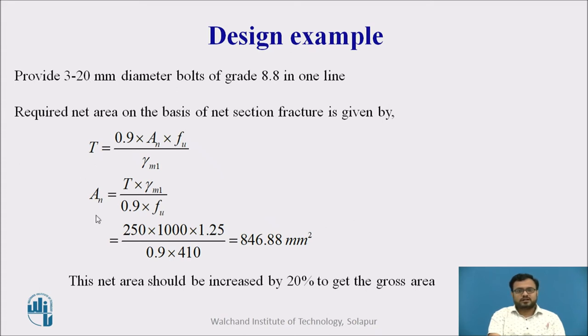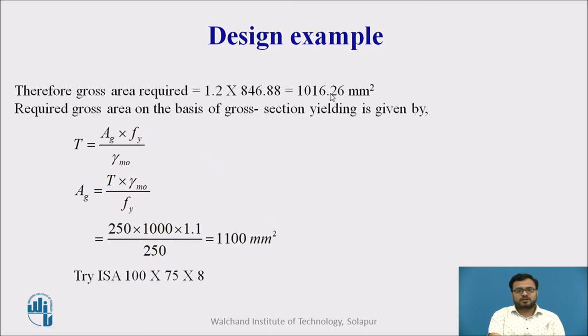Then we will determine the area by using net section fracture. TN is equal to 0.9 AN into FU divided by gamma M1. We will rearrange the term. We will determine AN which is equal to 846.88 mm square. Then we will increase this area by 20% to get the gross area. After increasing 20%, we get this one. We also determine the area by using the gross section yielding. T equal to AG into FY divided by gamma M0. Rearranging the terms AG is equal to T into gamma M0 divided by FY, which is equal to 1100 mm square.